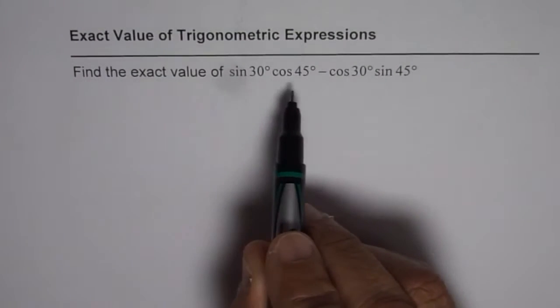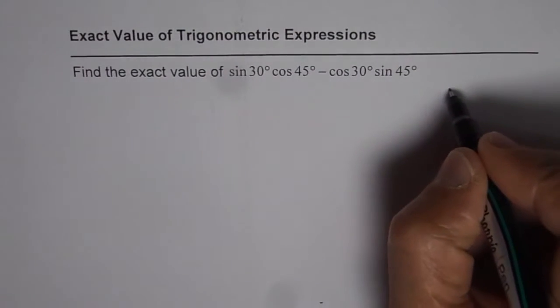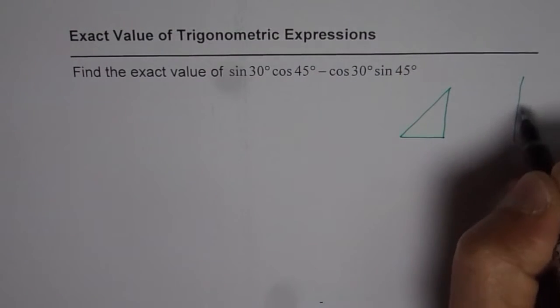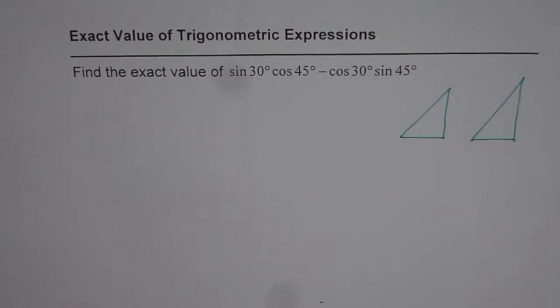Since we have 30 and 45 degrees, we need special triangles which are 45-90-45 and 30-60-90. Let me sketch these triangles first.